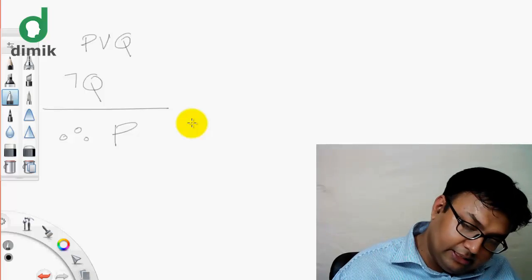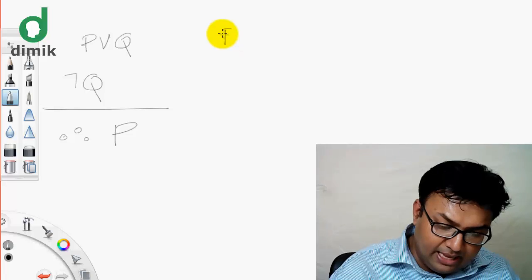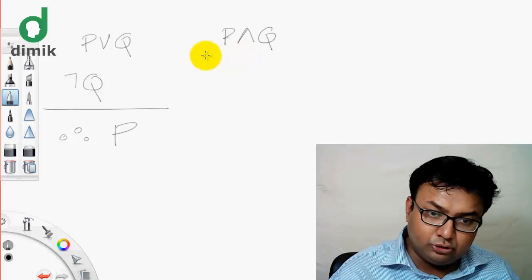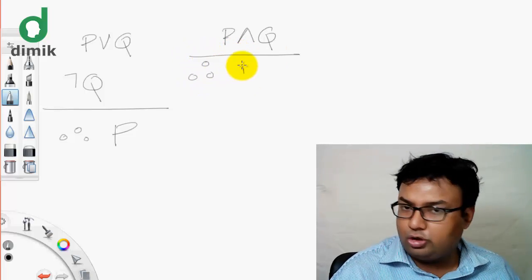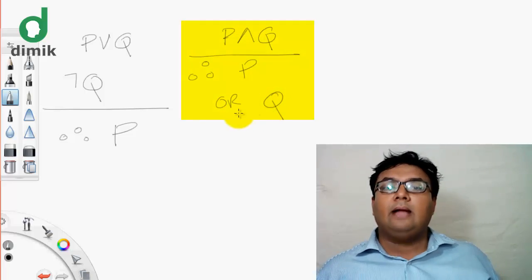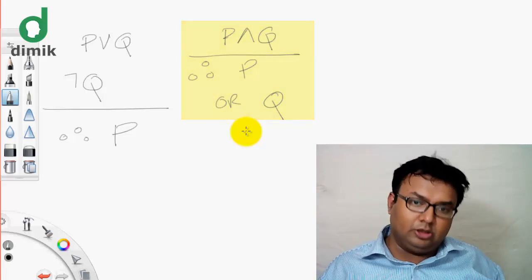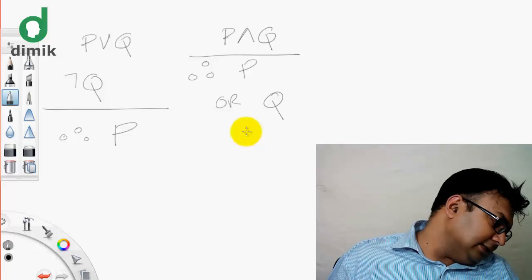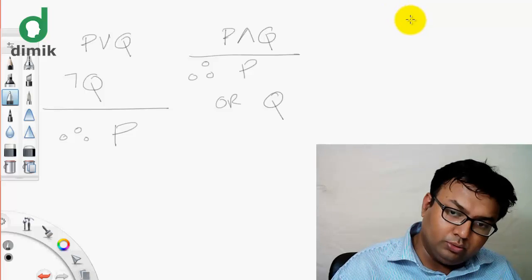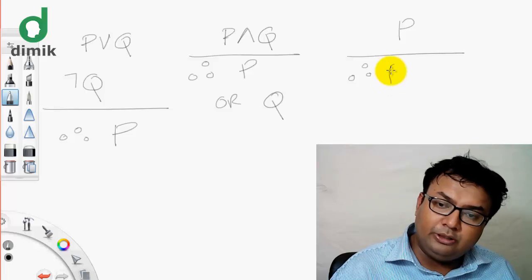So we know that P and Q are true. If I know that P and Q is true, I can infer that P is true. This is the simplification rule: from P and Q, we can conclude P is true.